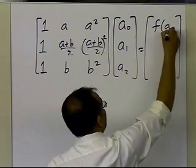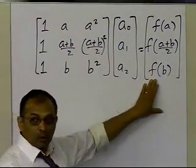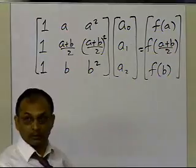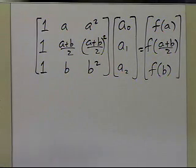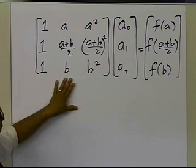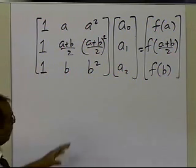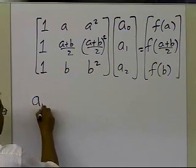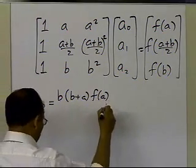On the right-hand side we have the known values f(a), f((a+b)/2), and f(b). There are several ways to solve these three equations — Gaussian elimination, Cramer's rule, and others. I used Maple to solve them, and found expressions for a₀, a₁, and a₂, each involving the function values at the three points and the limits of integration.